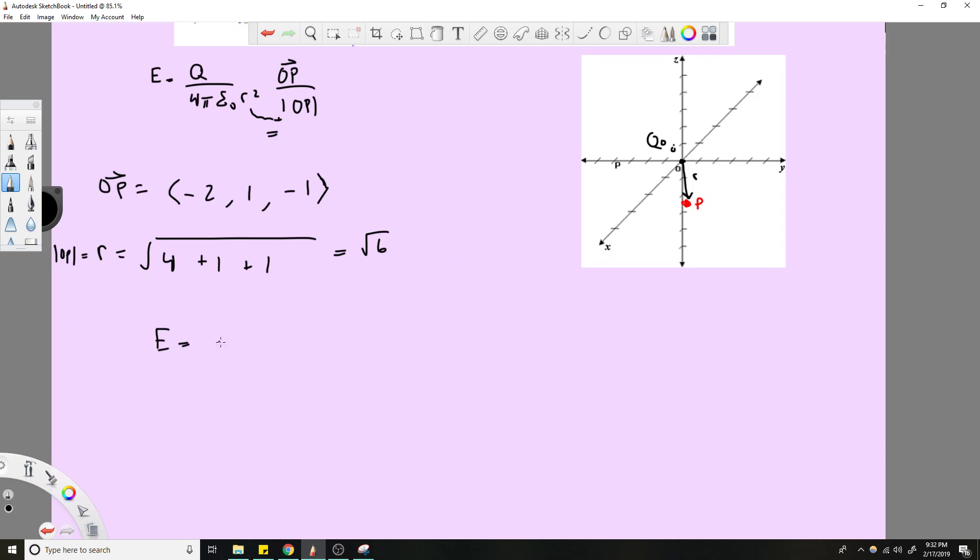So we know E is equal to, this is going to be our Q0 point, right? Q0 over 4 pi epsilon naught, over R, which is square root of 6 squared, so that's going to be a 6 right there. Times negative 2, 1, negative 1. And then this value, OP, is also square root of 6, so that's over square root of 6.